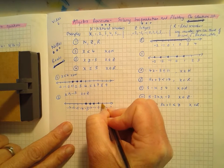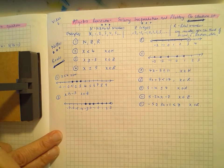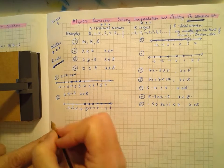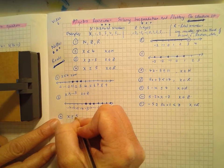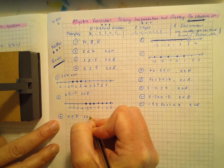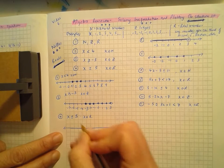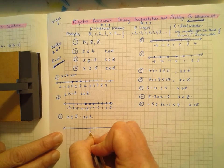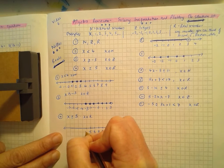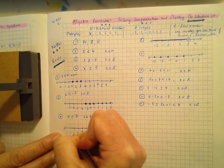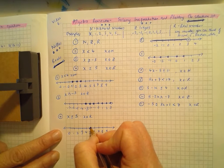We have 11 examples today. The first few are just to remind you of a couple of things. When dealing with solving inequalities, it's important to know what types of numbers could be our answer. N stands for natural numbers, which are things like 1, 2, 3, 4, 5 — positive whole numbers.